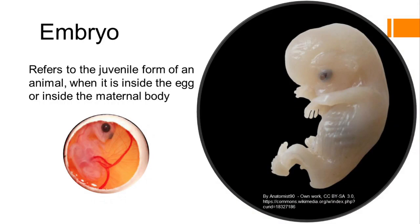What is an embryo? All organisms start development from a single cell called zygote and they pass through different stages of development. These stages are passed either inside the egg or inside the maternal body. In the case of reptiles and birds, development of the embryo takes place inside the egg, and in the case of mammals, development takes place inside the womb of the mother. The juvenile form of an animal present inside the egg or inside the maternal body is called an embryo.